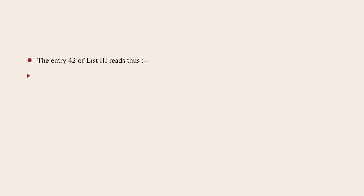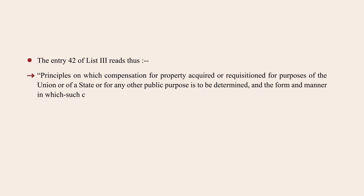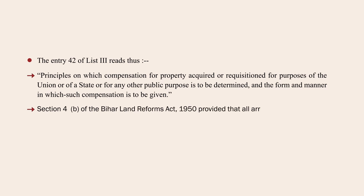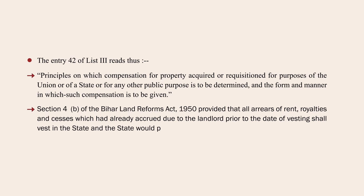These acts were enacted under Entry 42 of List 3, which read: 'the principles on which compensation for property acquired or requisitioned for purposes of the Union or of a State or for any other public purpose is to be determined, and the form and manner in which such compensation is to be given.' Section 4 of the Bihar Land Reforms Act provided that all arrears of rent, royalties, and cesses which had already accrued due to the landlord prior to the date of vesting shall vest in the state, and the state would pay only 50% of these arrears to the landlord.